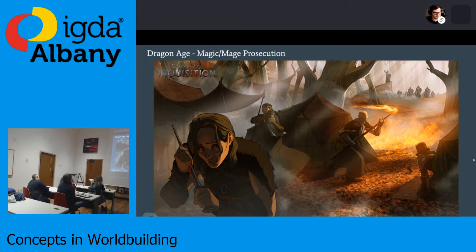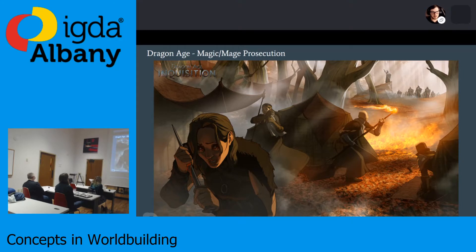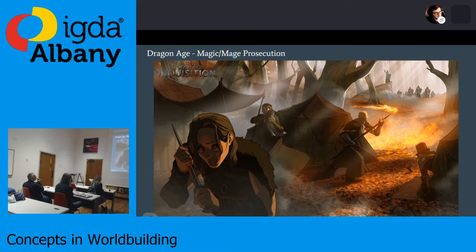Next up is Dragon Age, where mages are not illegal but are widely prosecuted — driven into hiding, or allowed to live in large cities but relegated to slums and shacks, shoved away from everybody. This is a really good example of magic being present but shunned and driven out by force wherever possible. Mages in Dragon Age have an organization called the Circle that trains mages. This shows that while magic isn't strictly forbidden in this setting, there are established forces working against it.